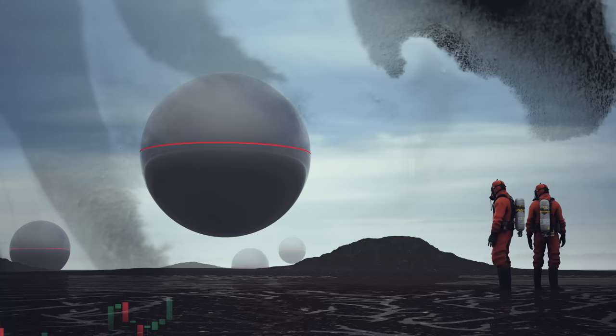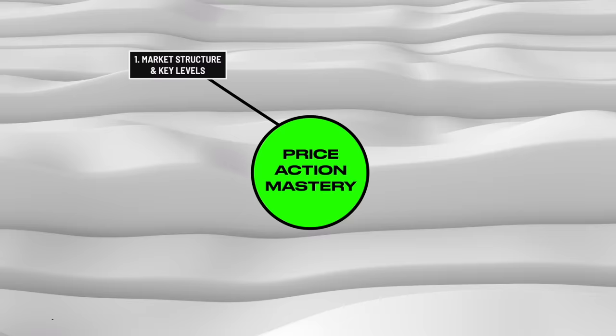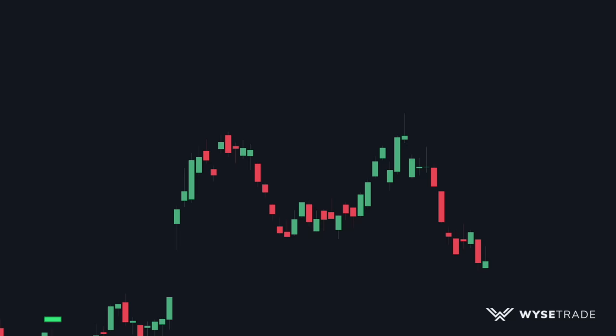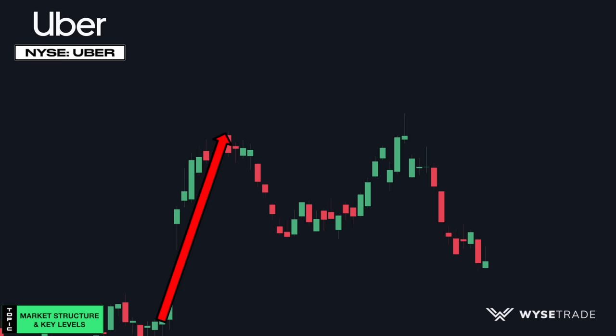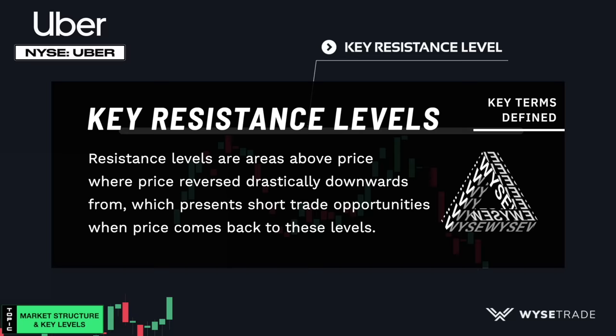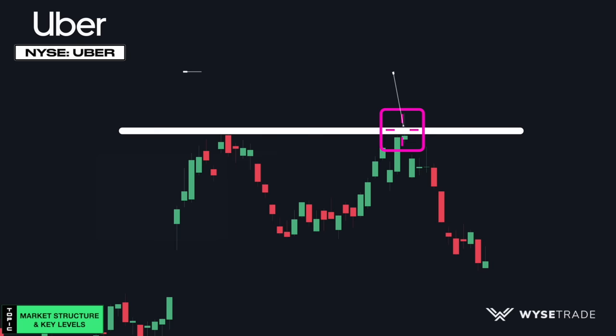Starting with market structure and key levels. What are key levels exactly? This is the Uber stock. Price moves up before reversing drastically, making this a key resistance level. Resistance levels are areas where price can possibly reverse downwards from. So as price came back up, you had a great short trade setup right at the resistance level that produced a winning short trade.